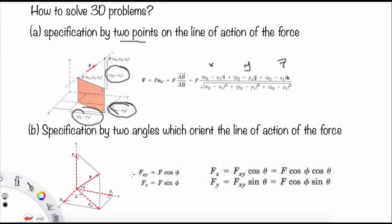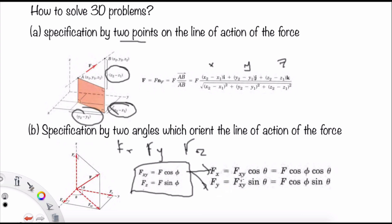In the second method, using two angles theta and phi, we resolve F into horizontal and vertical components first. The vertical component is Fz equal to F sin phi, and the horizontal component in the xy plane is Fxy equal to F cos phi. Then Fxy is further broken down: Fx equals Fxy cos theta, and Fy equals Fxy sin theta.